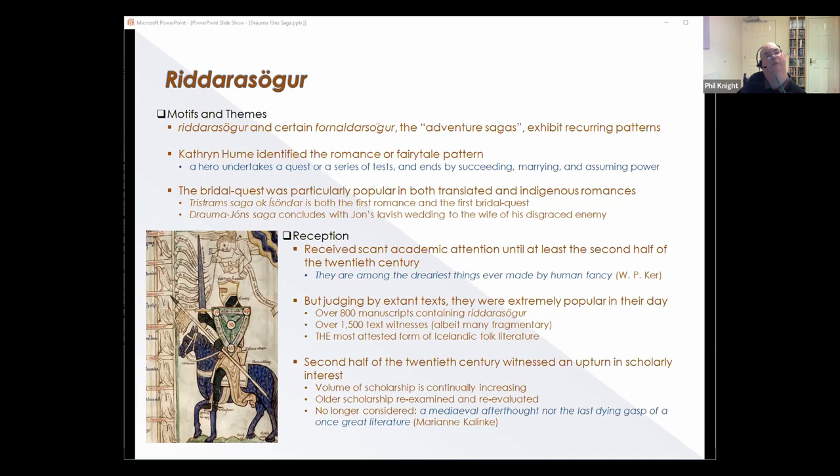This is probably not surprising, given that what was probably the very first Norse romance, Tristrams saga ok Ísöndar, which I mentioned previously, was probably also the first bridal quest, and so undoubtedly it had an extremely influential effect on all those that followed. Though not a bridal quest per se, it's notable that Draumr Jóns saga concludes with a lavish wedding of John to Ingeborg, the wife of his disgraced and exiled enemy, the Earl.